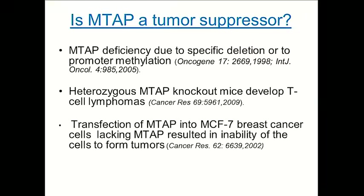Now, the question is whether MTAP is a tumor suppressor. There's some evolving evidence that it may be — the effects of the P16 homozygous deletion are not only due to CDKN2A and B deletion, but also MTAP deletion. There are instances where MTAP is specifically deleted, and there's also evidence that MTAP can be downregulated by promoter methylation.